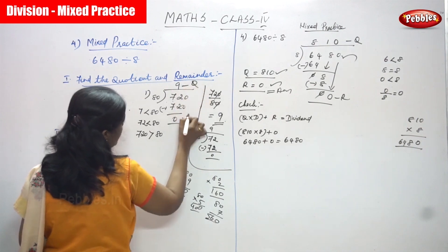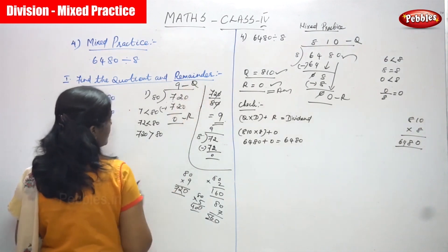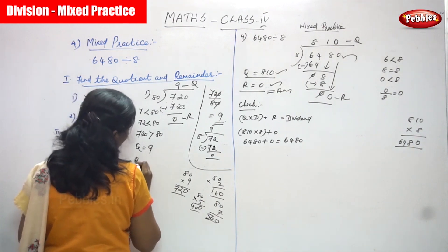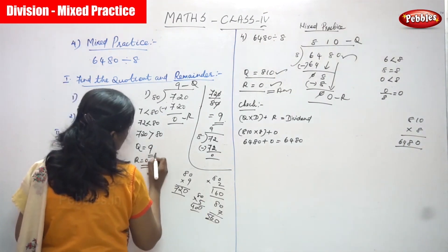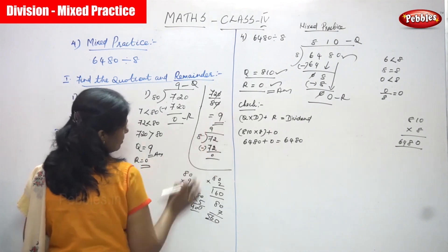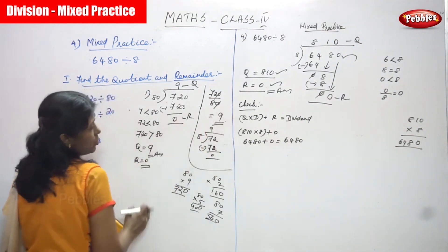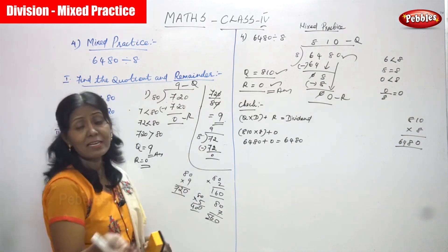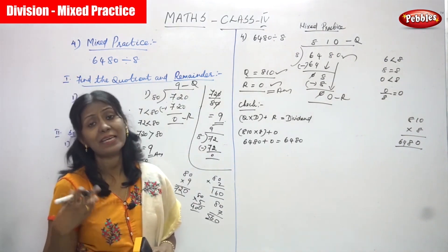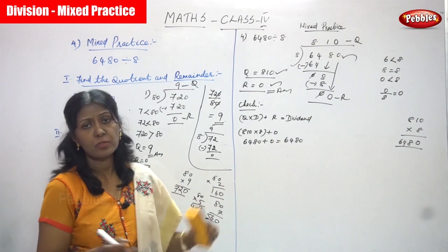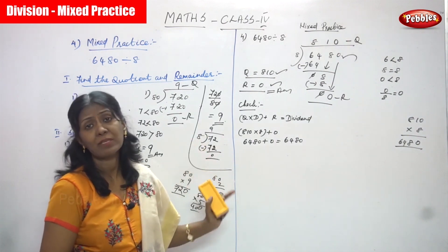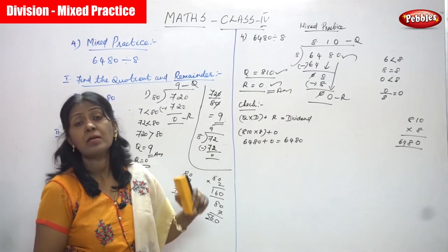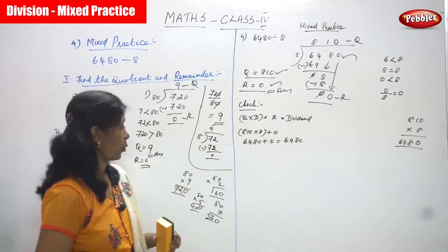This is the quotient and this is the remainder. The answer for this question is quotient is 9 and remainder is 0. This is a very simple method — this is the actual, original method. I taught you both methods; whichever is convenient for you, you can choose that method. I am giving a lot of practice, especially in division.